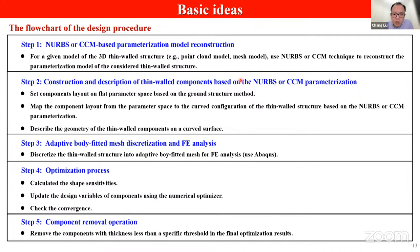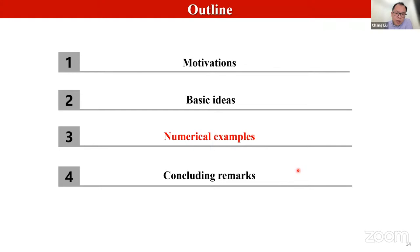This slide shows the flow chart of the proposed method. Given a curved surface, we use NURBS techniques to reconstruct the parametric model of the shell structure, then the mapping technique is used to arrange the rib components on the curved surface. Next, the shell structure is discretized into an adaptive body-fitted mesh and finite element analysis is performed. Sensitivity is computed and design variables are updated. When the optimization converges, the rib components with thickness less than the threshold are removed and the final design results are obtained.